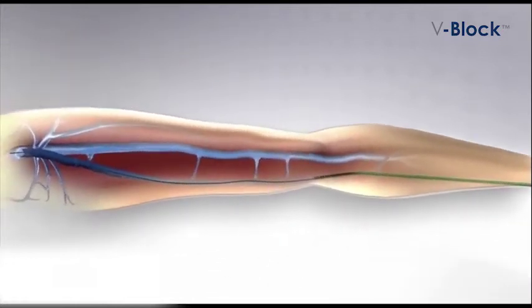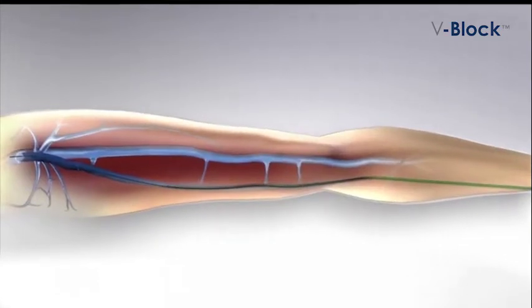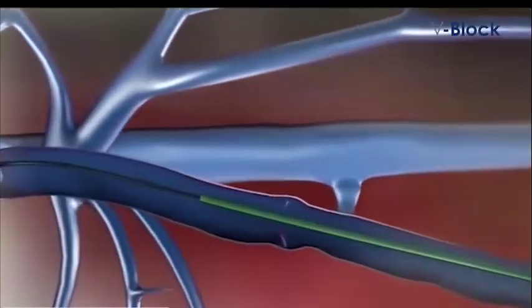A 6-French double-lumen sheath is then advanced over the guide wire and its distal tip is positioned 2 cm below the sapheno-femoral junction.